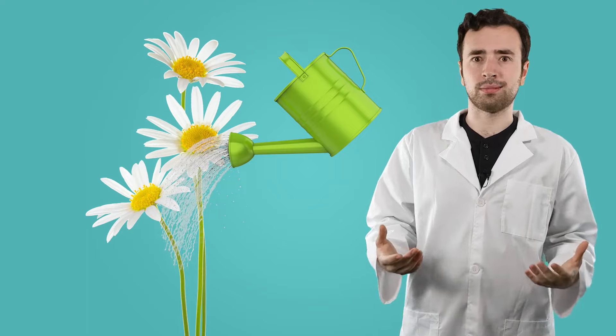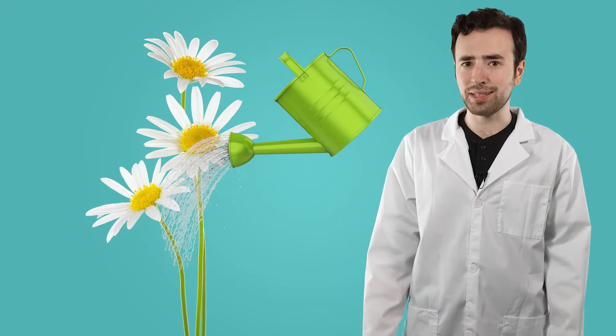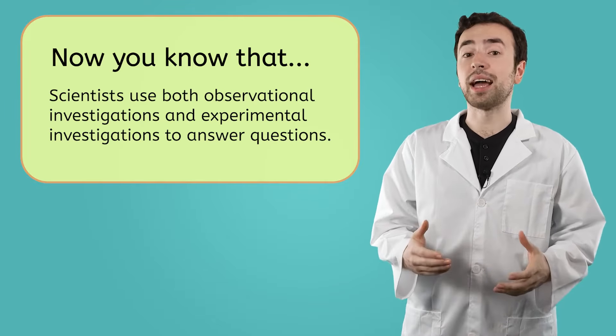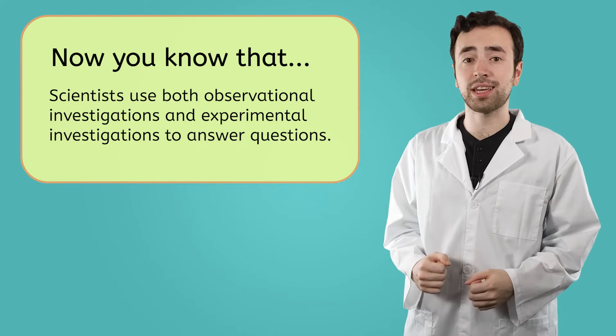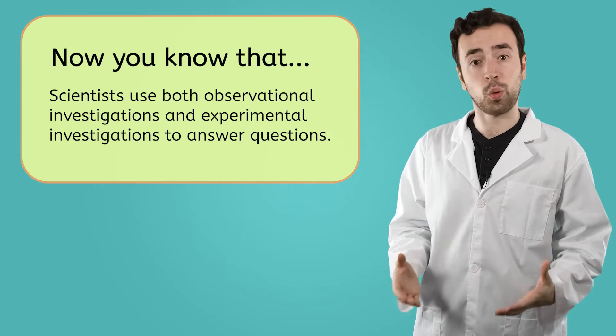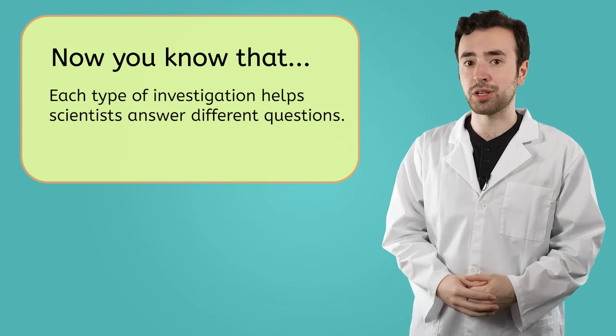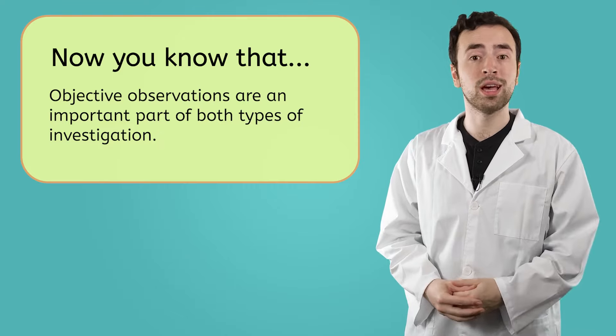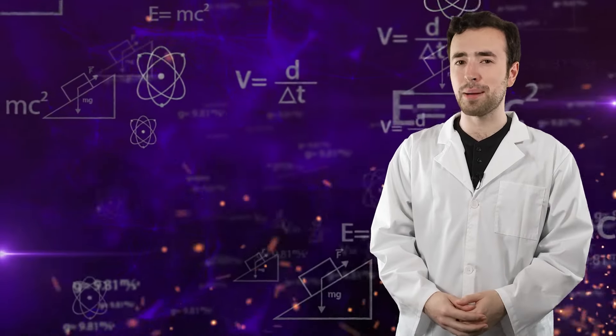And speaking of experiments and observations, I gotta go start watering those daisies. But before I do that, let's review everything we've learned today. We now know that scientists use both observational investigations and experimental investigations to help them answer questions. Each type of investigation helps scientists answer different types of questions, and objective observations are an important part of both. Be sure to check out the practice questions and activities that go with this lesson. Thank you so much for joining us, and as always, remember — science is all around us. See you next time.